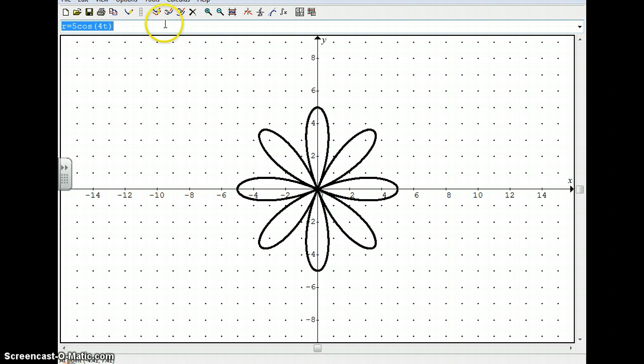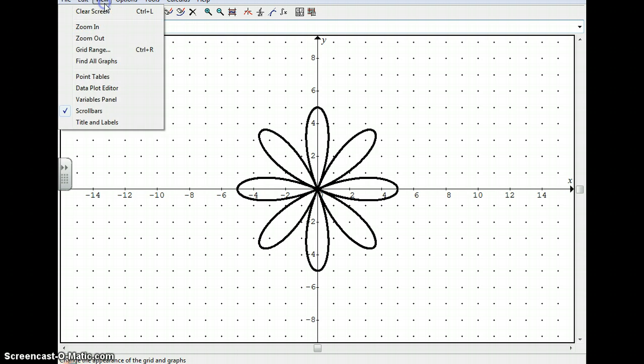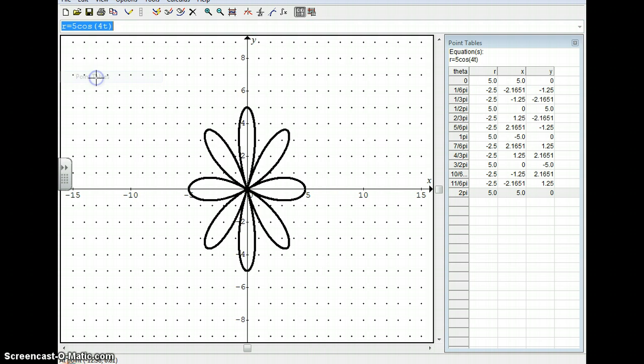There's another way also, which may or may not be that helpful. If you go up here to view, there's something called a point table. You click that, and over here you get a set of x and y values. Now, these are for just these specific theta values here. You can see they've gone from 0 to 2 pi in increments of pi over 6. And so these are the x and y coordinates for the points for these particular theta values. It may be that those are good enough.